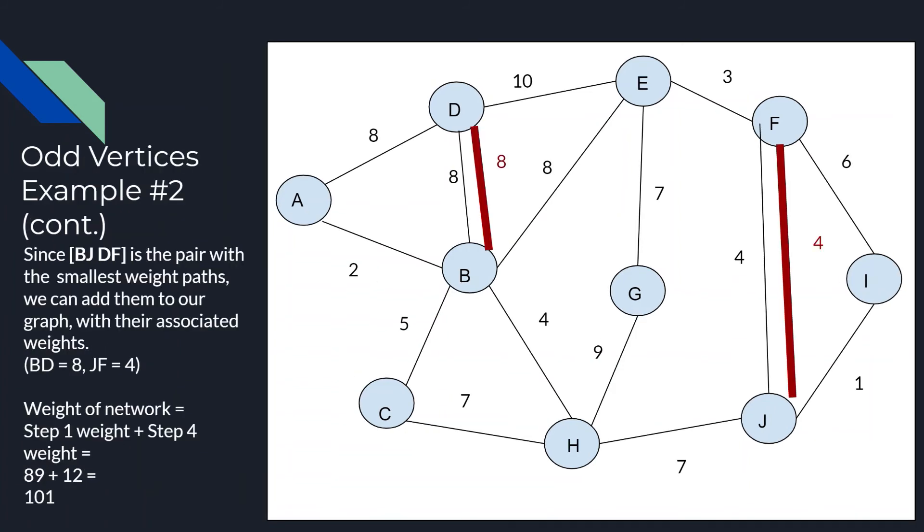Therefore, since the combination of the pair B, D and J, F gives us the smallest weight path of 12, we can add them to our graphs with their associated weights. And so from the weight of the network in total, due to the fact that we just added more edges, additional edges from the shortest odd pairings, we would add the total weight with the paired weight, which gives us a total sum of 101.